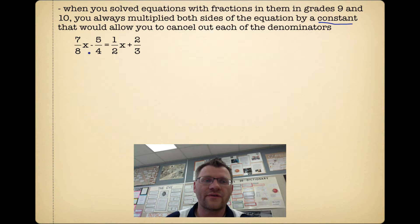And in this case, it would be 24, because all these numbers go into 24. So you'd multiply each term by 24, and then when you're done, you would simplify by canceling out the 8 and the 24, and the 4 and the 24, and the 2 and the 24, and the 3 and the 24.